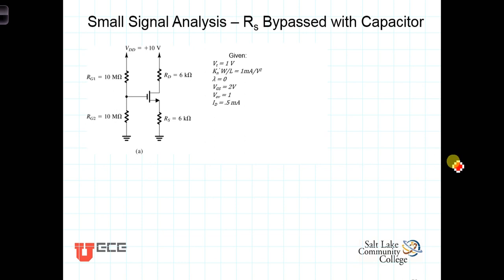In a previous model, we analyzed the DC biasing conditions for this circuit and found that the gate-to-source voltage was 2 volts, the overdrive voltage was 1 volt, and I_D was 0.5 milliamps.